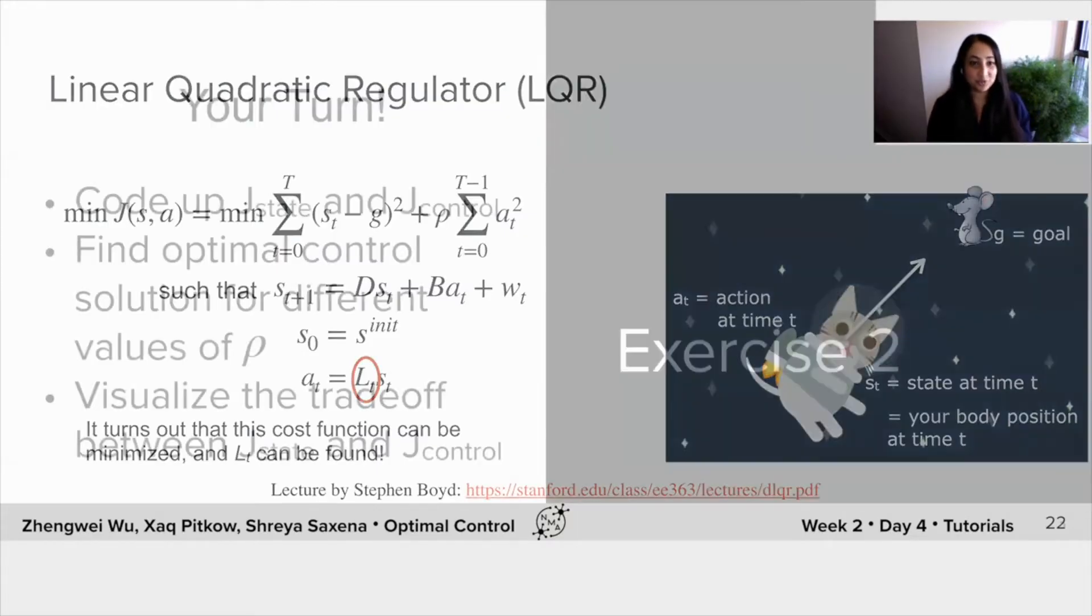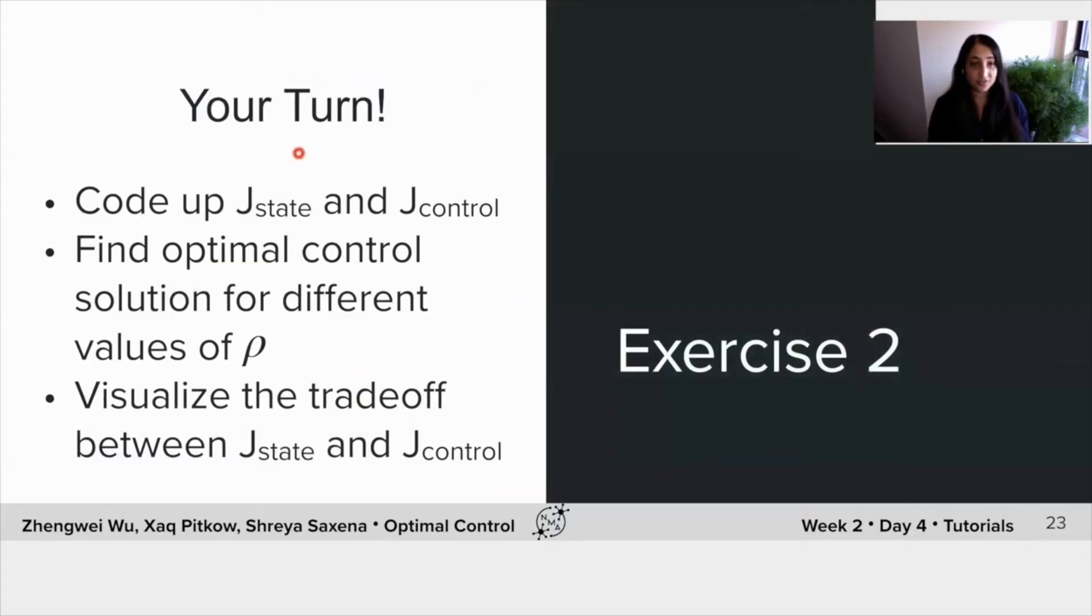But for now, I just want you to try out the solution. So really first code up J_state and J_control and then find the optimal control solution for different values of rho. And changing this value of rho can actually help you to visualize the trade-off between these two terms, J_state and J_control. And it also helps you to find values of J_state and J_control that cannot be reached even with any control input. So have fun at this next exercise. I'll see you back here in a bit.